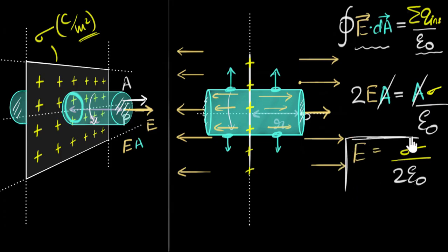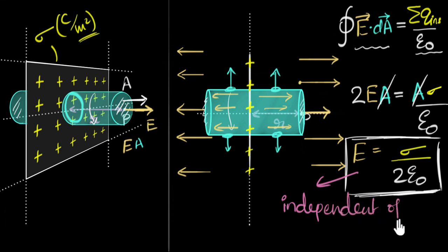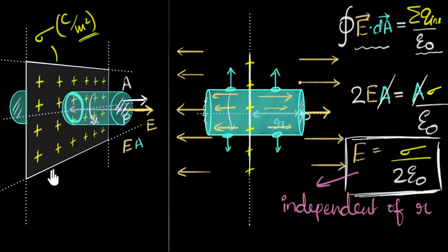That's our answer — a couple of steps, no integration, done. Now, do you see something interesting in this formula? There is no r in the formula. The electric field is independent of r, which means the electric field does not depend on the distance. Regardless of how far or how close you are to the sheet, the value is the same. That means the electric field everywhere has the exact same value — it's a uniform field. An infinitely long sheet of charge produces a uniform electric field.